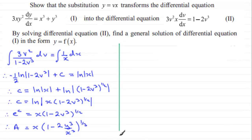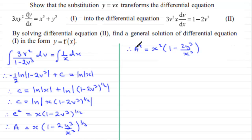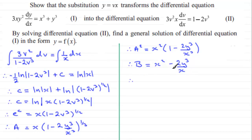Next we square both sides, so A squared equals x squared multiplied by 1 minus 2y cubed over x cubed. Calling A squared another constant b, we expand the bracket: x squared times 1 is x squared, and x squared times minus 2y cubed over x cubed gives minus 2y cubed over x. To get rid of this x in the denominator, we multiply throughout by x, giving bx equals x cubed minus 2y cubed.